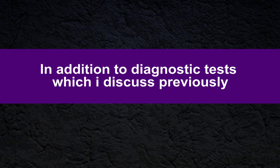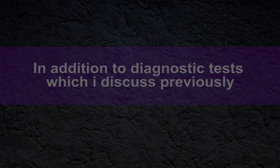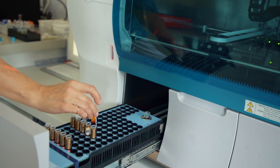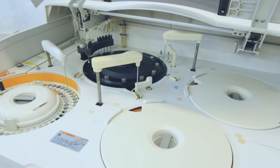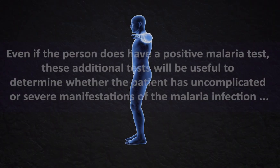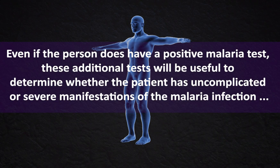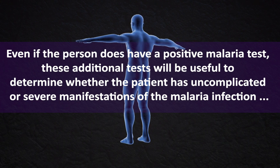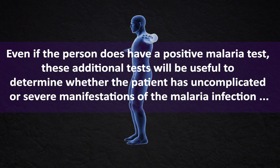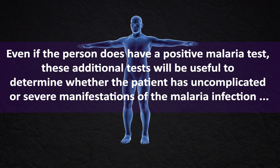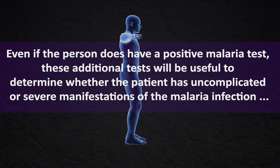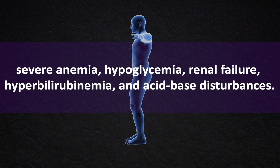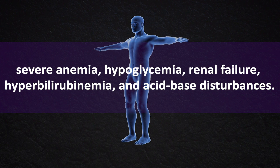In addition to the diagnostic tests discussed, it is important to conduct an initial workup — carrying out a complete blood count and routine biochemistry tests. Even if the person has a positive malaria test, these additional tests will be useful to determine whether the patient has uncomplicated or severe manifestations of malaria infection, such as severe anemia, hypoglycemia, renal failure, hyperbilirubinemia, and acid-base disturbances.